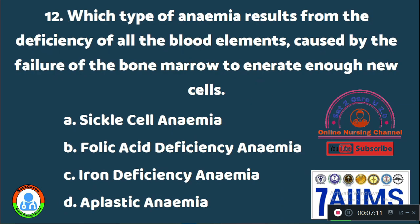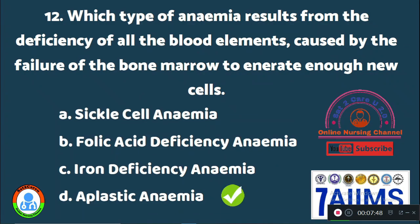Question 12: Which type of anemia results from the deficiency of all blood elements caused by the failure of bone marrow to generate enough new cells? Option A: sickle cell anemia. Option B: folic acid deficiency anemia. Option C: iron deficiency anemia. Option D: aplastic anemia. The type of anemia occurring due to bone marrow's inability to generate all types of blood cells is called Option D, aplastic anemia.